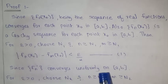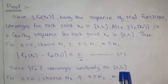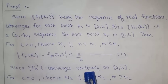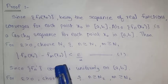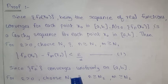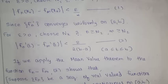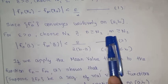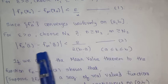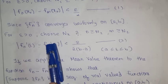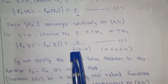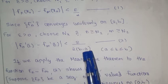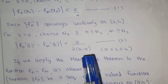Since the sequence fn' converges uniformly on closed interval [a, b], we apply the uniform Cauchy criterion. We choose N2 such that for n, m > N2: |fn'(x) - fm'(x)| < ε / (2(b - a)) for all x in [a, b].